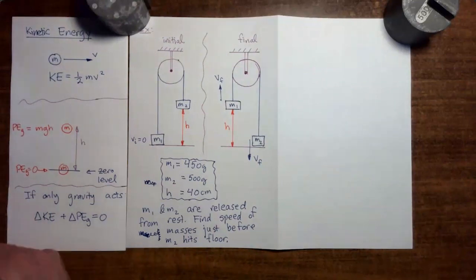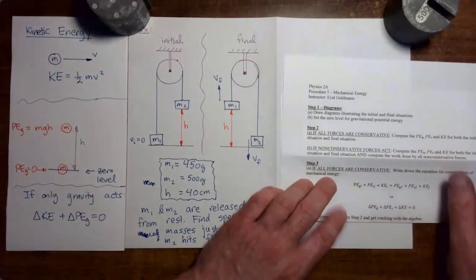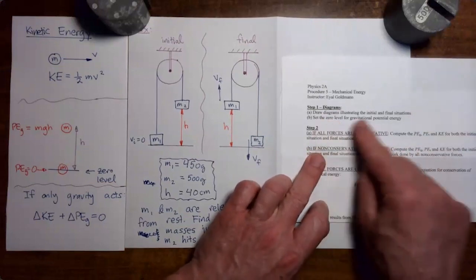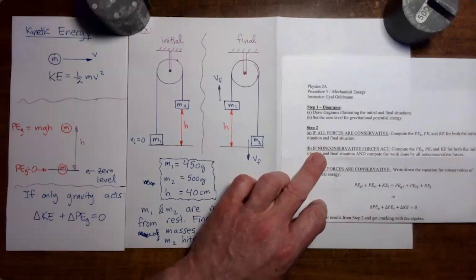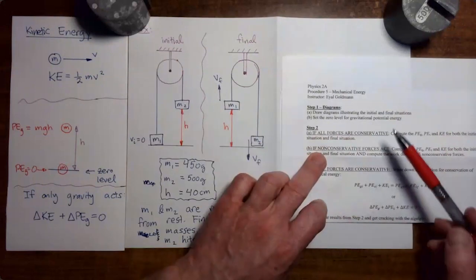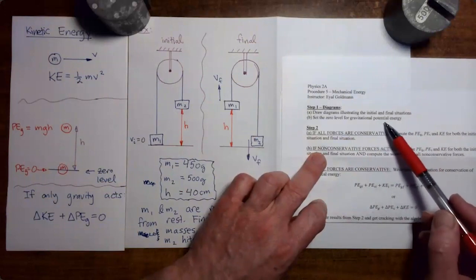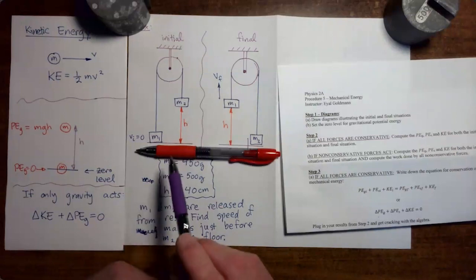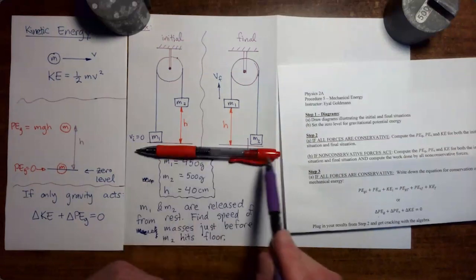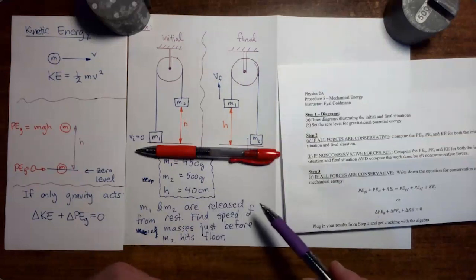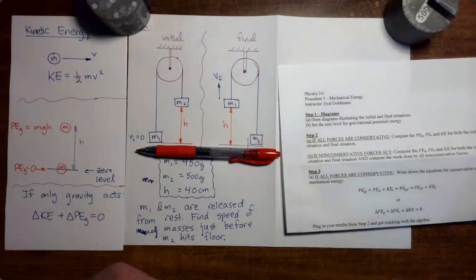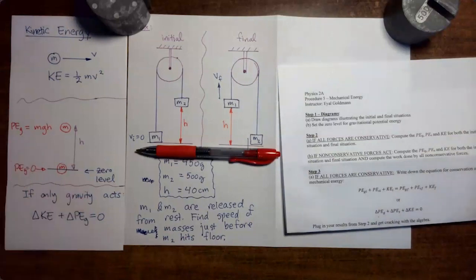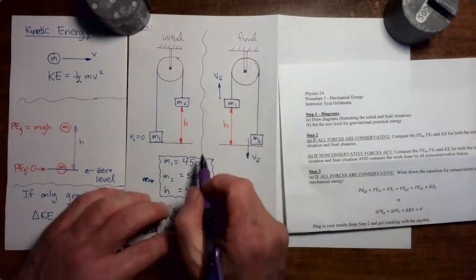We're going to do this problem using the same handout from the previous example problem, using conservation of mechanical energy. Step 1A: draw diagrams illustrating the initial and final situations — I already did that and labeled them initial and final. Step 1B: set the zero level for gravitational potential energy. In this problem, it makes sense to put the zero level down at the floor. This way, some gravitational potential energies will be zero, simplifying things, and others will be positive, avoiding unnecessary minus signs.